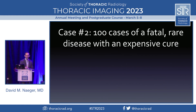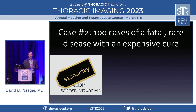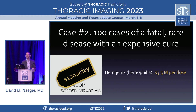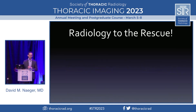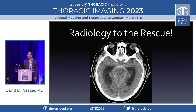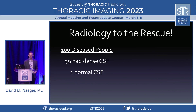Case two. We have 100 cases of a brand new disease across the entire planet. A very expensive cure — to be cured from this disease, we have to buy you an incredibly expensive car. So we need to get the diagnosis right and we don't want to treat everyone unnecessarily. In this magical disease, a young radiology researcher found that it causes high density in the CSF — not blood, but this disease. They found a test.